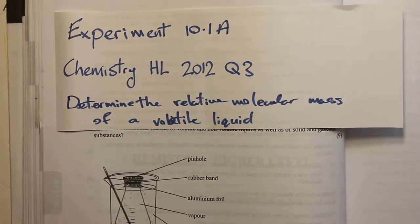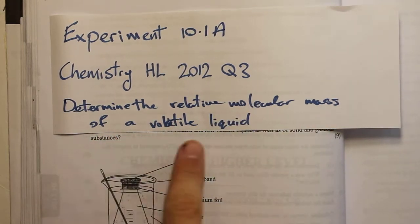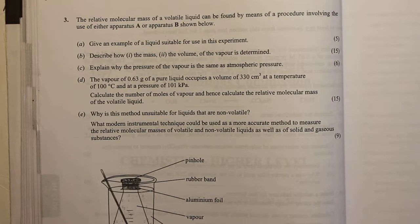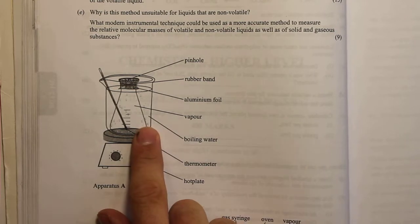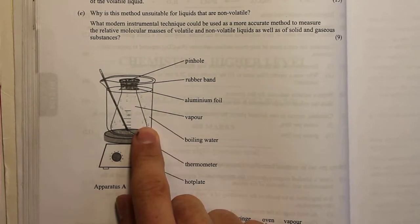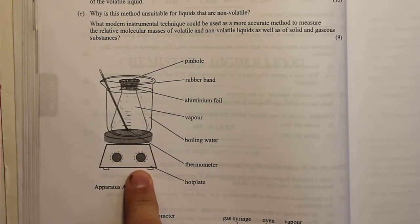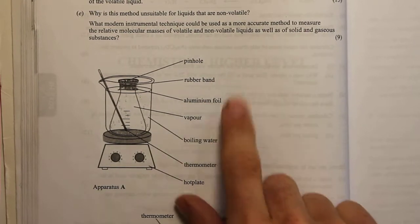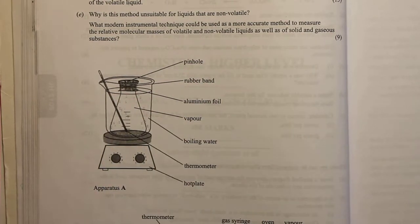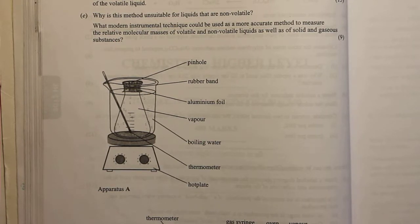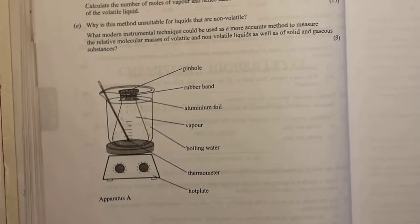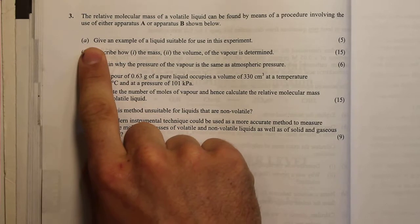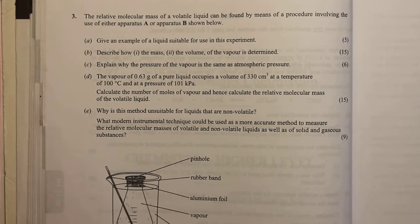This is a chemistry experiment — Higher Level 2012, Question 3 — in which we are determining the relative molecular mass of a volatile liquid. We're looking at what the question calls apparatus A: a conical flask containing the volatile liquid in some water, heated on a hot plate. We have a thermometer, boiling water, aluminium foil, a rubber band around that aluminium foil, and a pinhole. For part A, we're asked to give an example of a liquid suitable for use in this experiment.